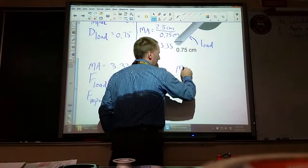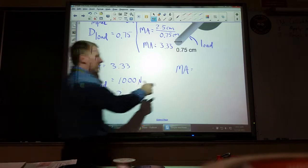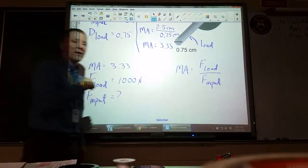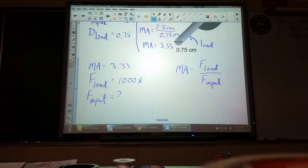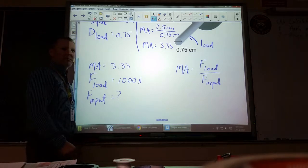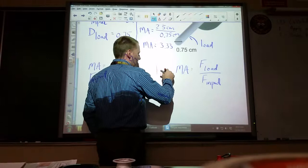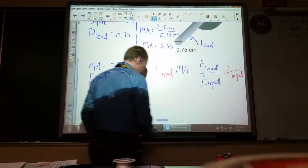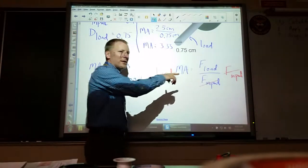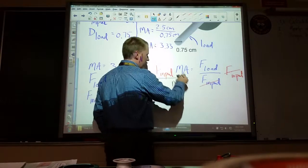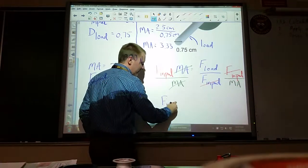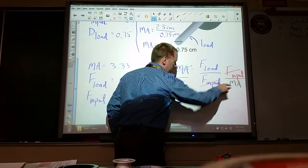So now we're going to go back to our formula that goes for this machine and any others. Mechanical advantage is F_load over F_input. I want to solve for F_input, that's what it's asking me to find. If I multiply by F_input on both sides, that's going to cancel it out. We have one on top, one on the bottom, that will cancel, leaving F_input times MA equals F_load. Then you're going to divide by mechanical advantage to get it off of this side. And that leaves me F_input on the left is equal to F_load with mechanical advantage on the bottom.